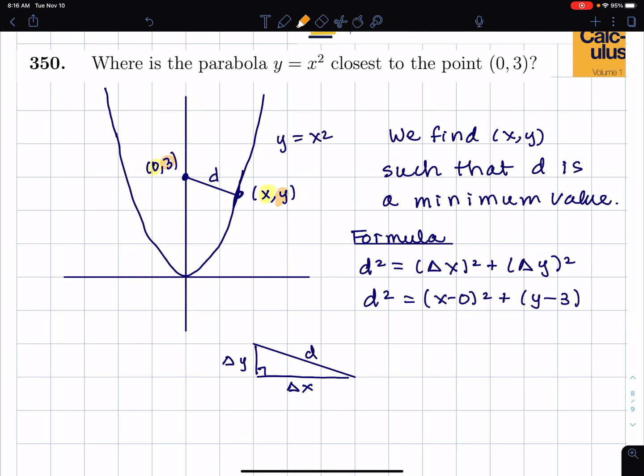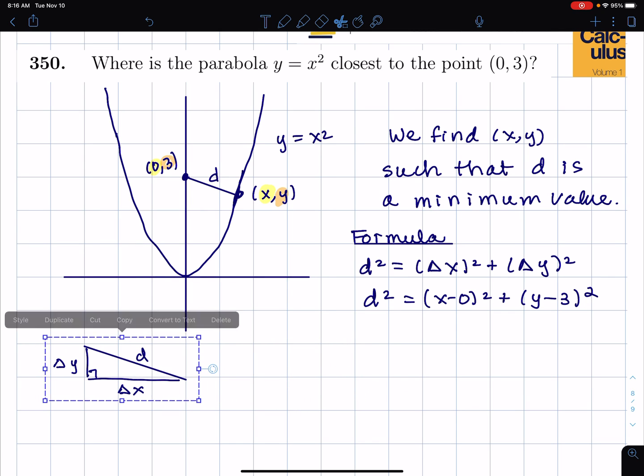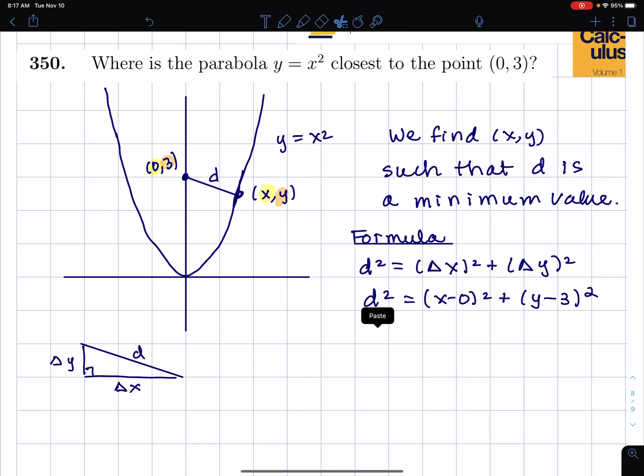Now I'm trying to find x and y that minimize d. Notice I didn't bother to take the square root of this d squared expression and I don't want to because later on I'm going to take a derivative and I don't want to take the derivative of a square root. So just simplifying a little bit I have d squared equals x squared plus (y minus 3) squared.